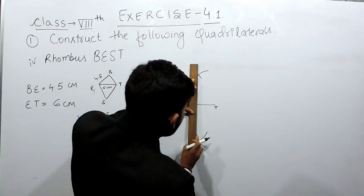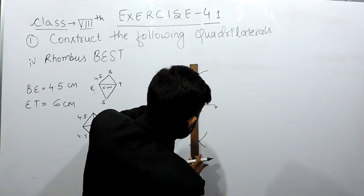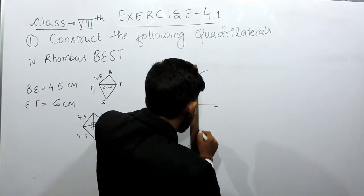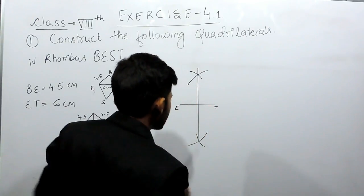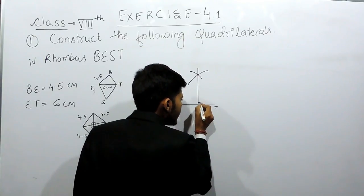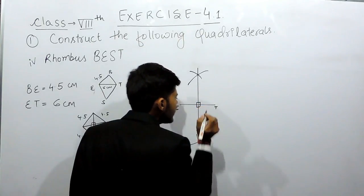Now we will join these two points and this will give us 90 degrees. So this angle is 90 degrees. This is also 90 degrees, this is also 90 degrees and this is also 90 degrees.